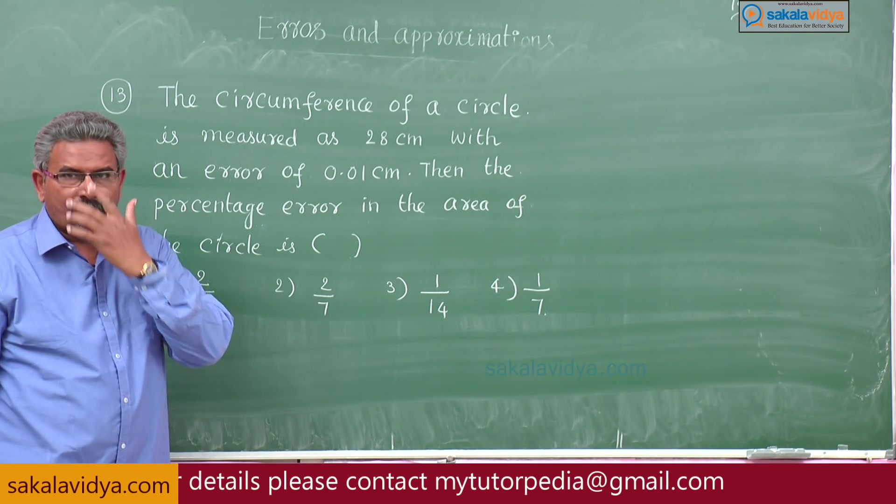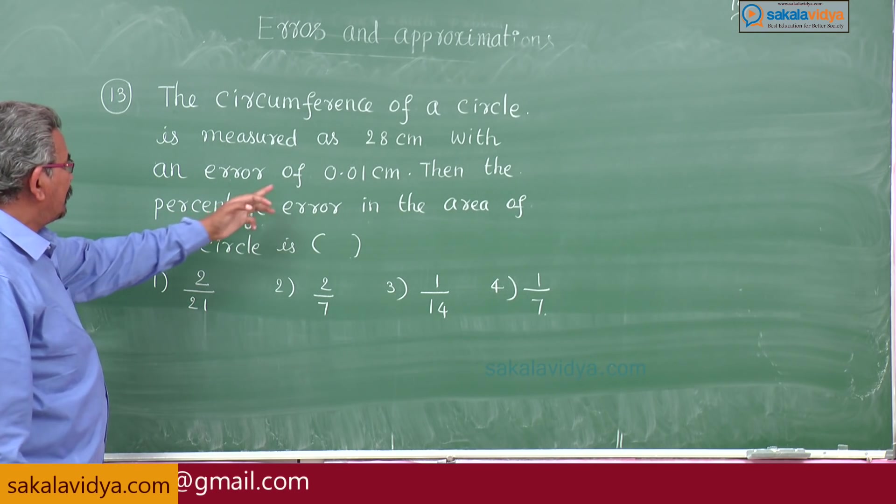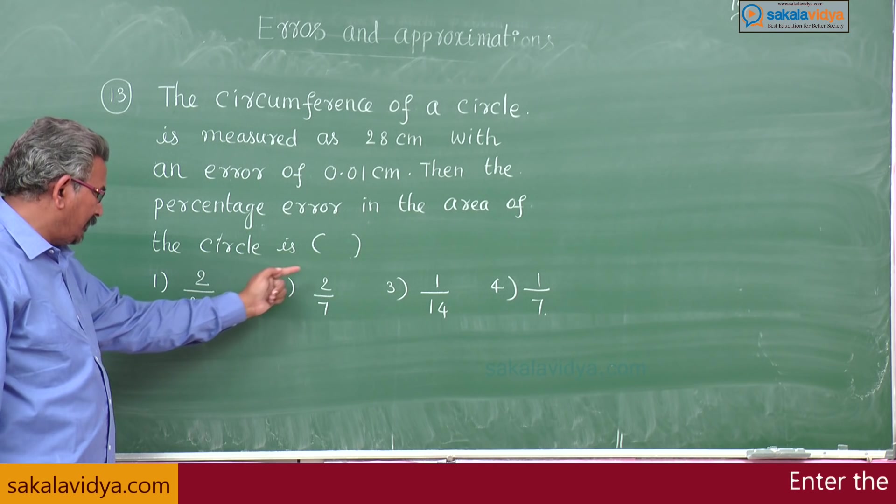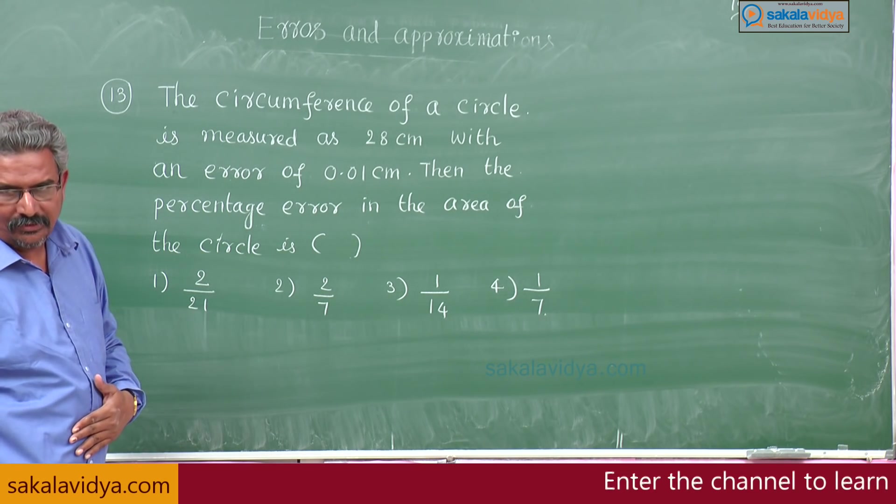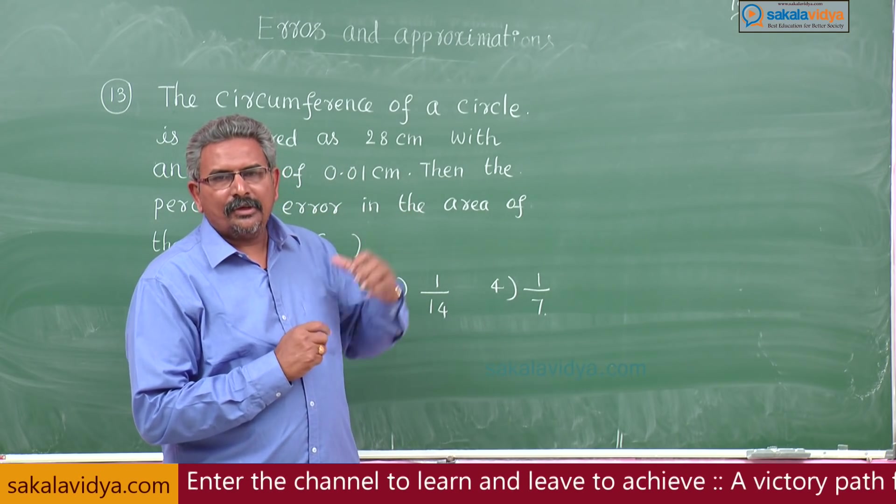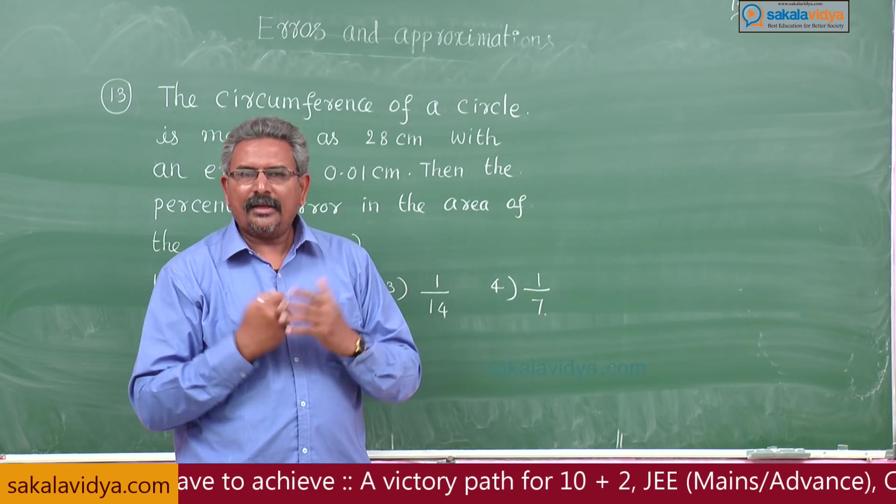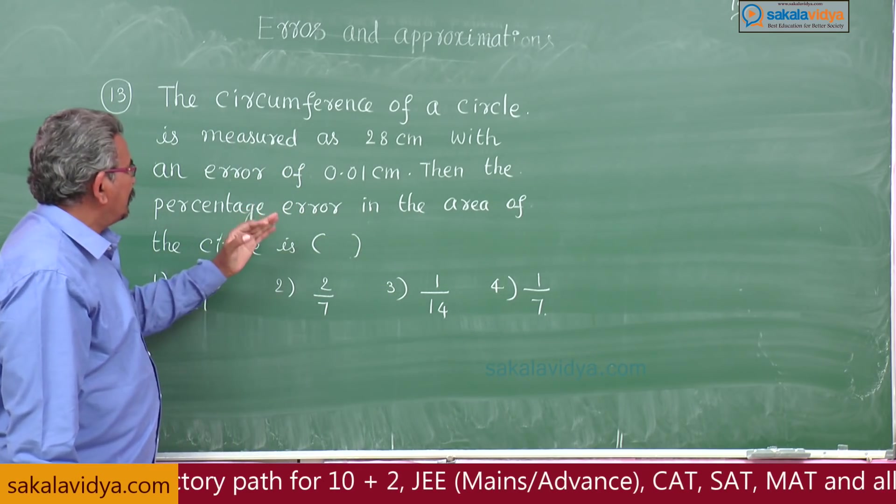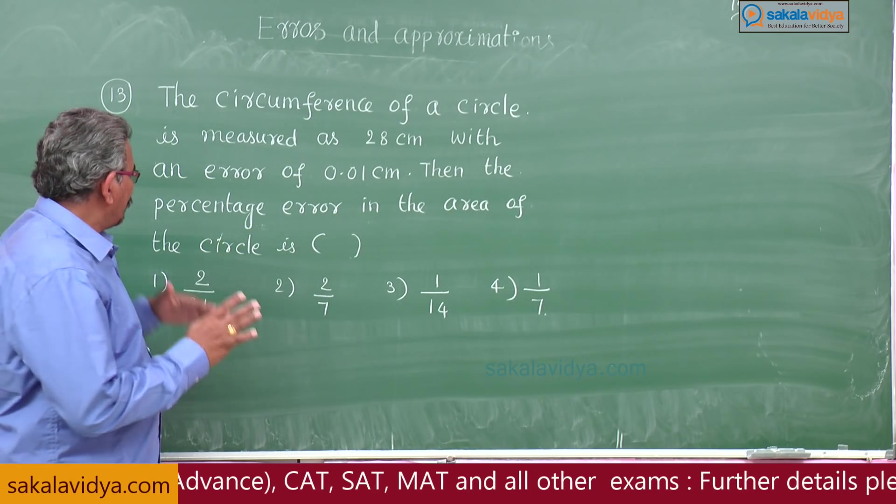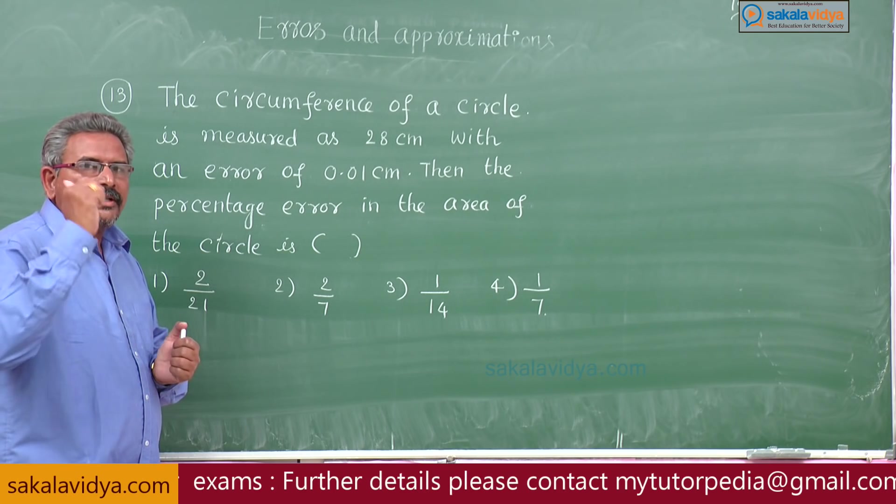Thirteenth problem: the circumference of a circle is measured as 28 centimeters with an error of 0.01 centimeter, then the percentage error in the area of the circle is. This problem is related to the circle and moreover the circumference is given. Let us say circumference is x, x is equal to 28 centimeters, and the error is delta x is equal to 0.01 centimeter. We are asked to find out the percentage error in the area: delta A by A into 100 is equal to how much?